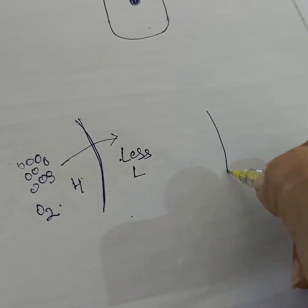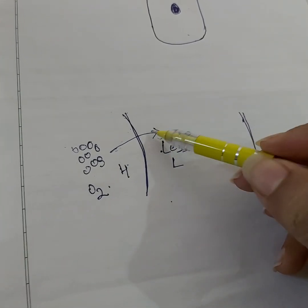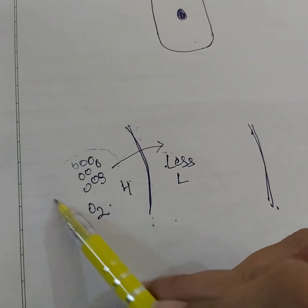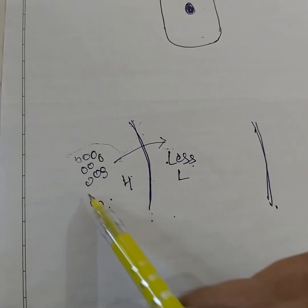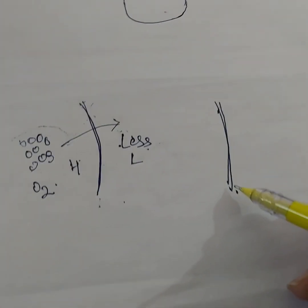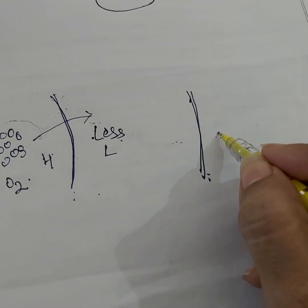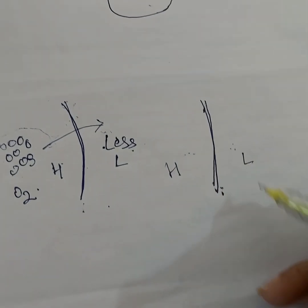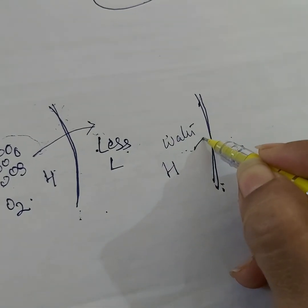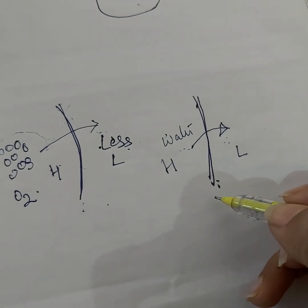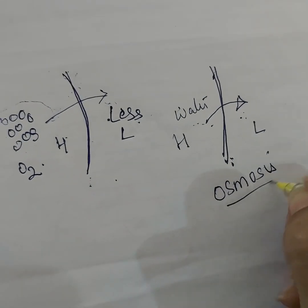Osmosis definitely needs a membrane, whereas diffusion does not necessarily need one — ions, gases, and nutrients will move from higher to lower concentration until uniformly distributed even without a membrane. When we talk about osmosis across a semi-permeable membrane, when there are two solutions — one with higher water concentration and one with lower — water molecules move from the region of higher water concentration to lower water concentration across the semi-permeable membrane. This phenomenon is called osmosis.